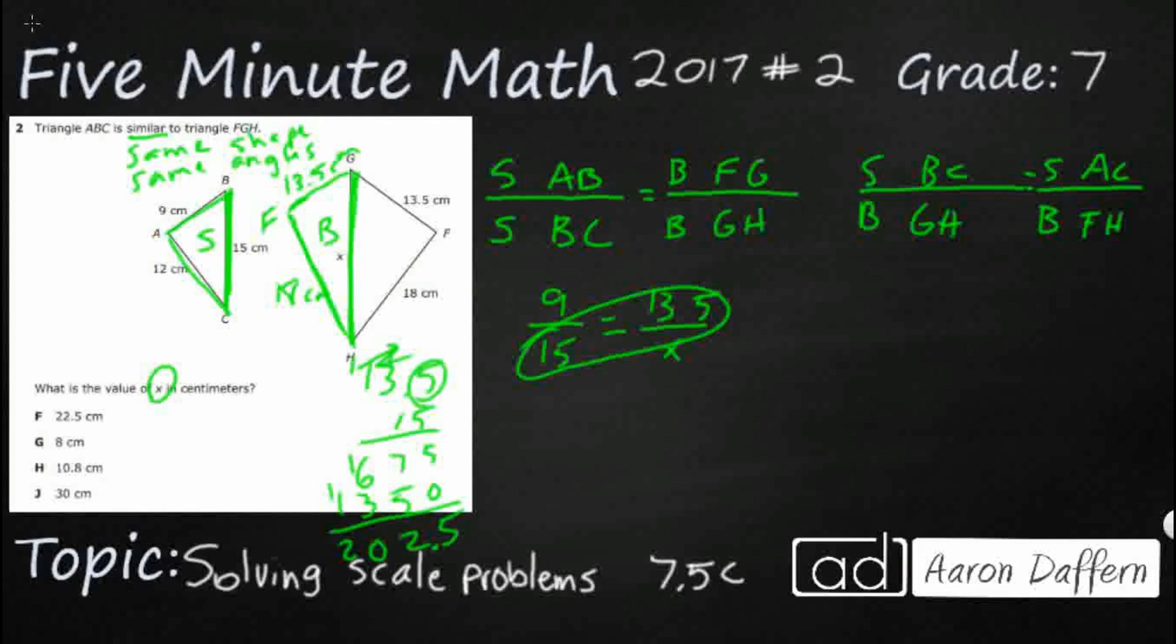Remember we got one digit right there. So 9x equals 202.5. So let's divide both sides by 9 and we'll see what we can get. So 9 goes into 202.5. That's kind of a random number. 9 goes into 20 twice, 18. It's going to be 22. Still goes in there twice, 18. But look what we've got now. 45. So there we go. 22.5. So that's going to get me F, 22.5.